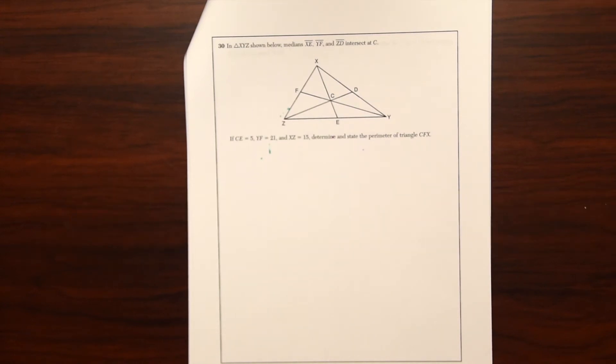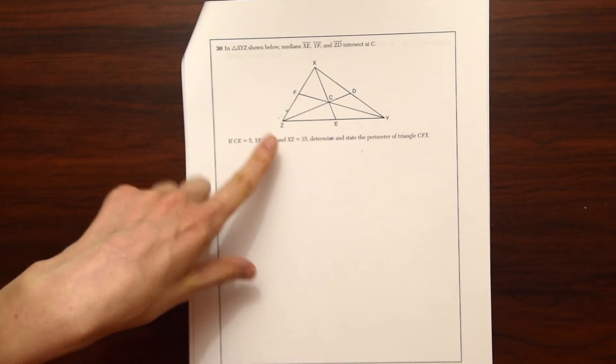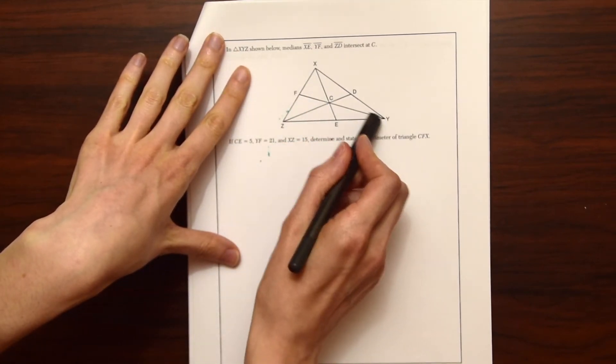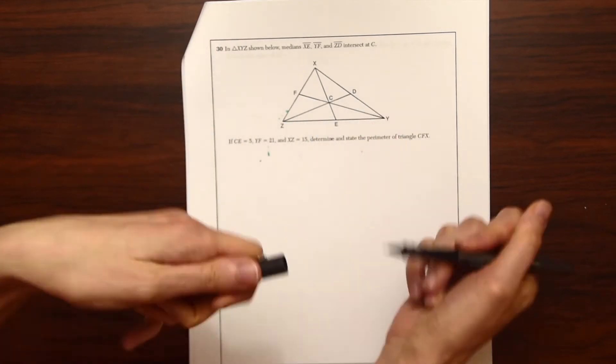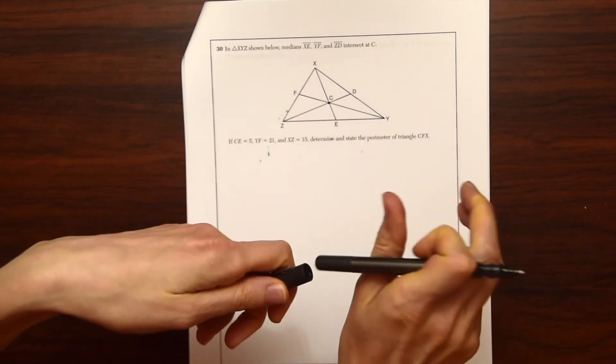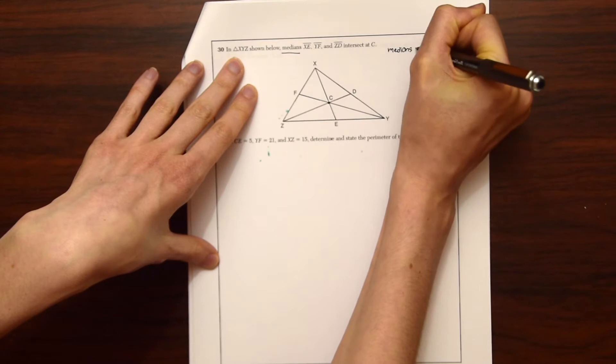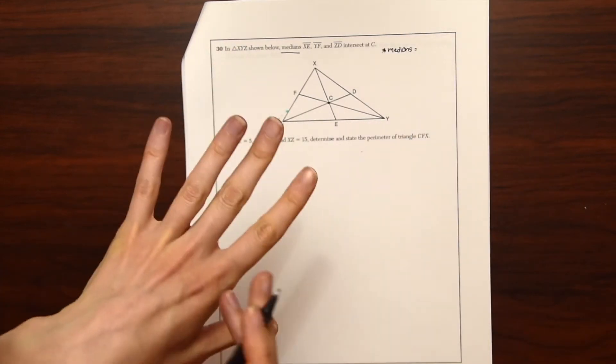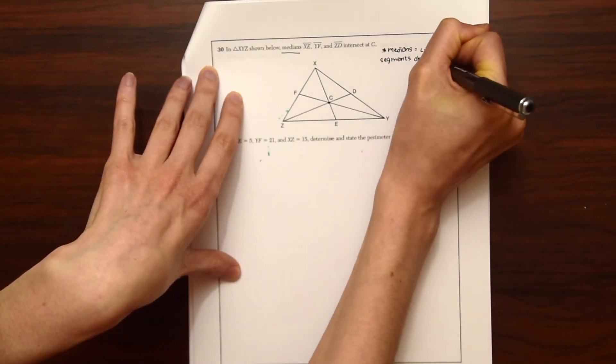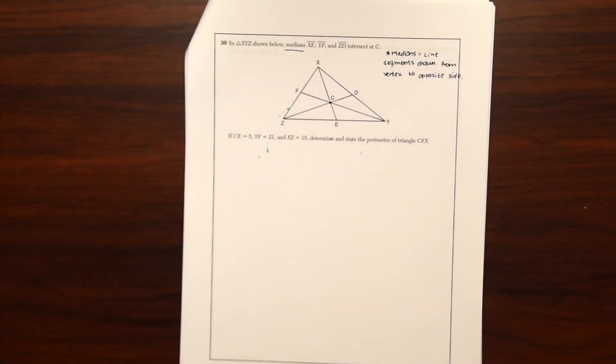Question number 30. So we have in triangle XYZ shown below medians XE, YF, and ZD intersects at point C. So if they're medians, just a little reminder what medians are. Medians are line segments drawn from a vertex to the midpoint of the opposite side.